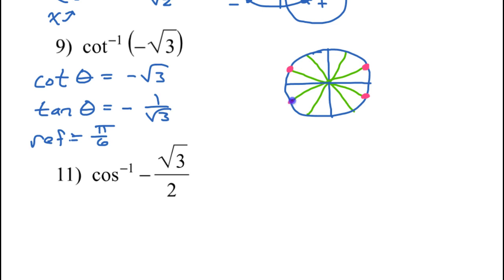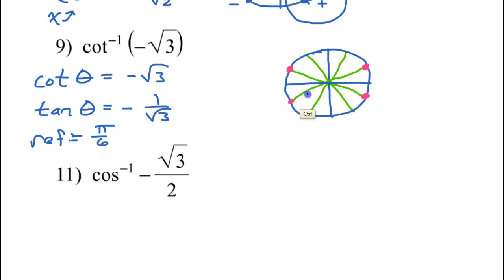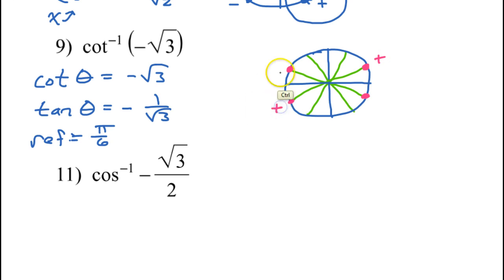The tangent of any of these angles is going to be some kind of 1 over radical 3. It's just that two of them are positive and two of them are negative. Remember that tangent is positive in the first quadrant and in the third quadrant, and tangent is negative in the second quadrant and the fourth quadrant.